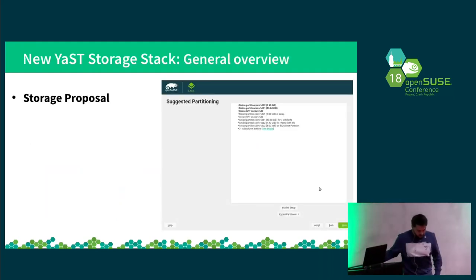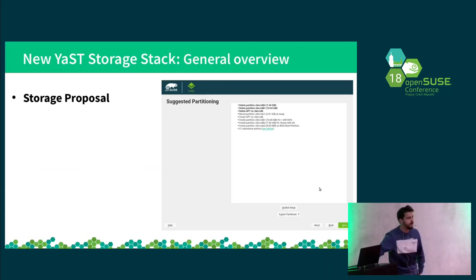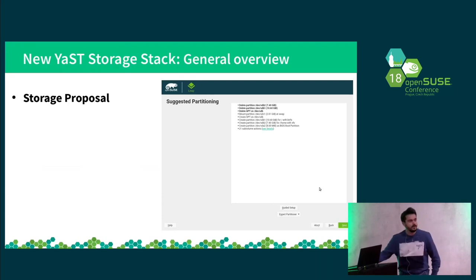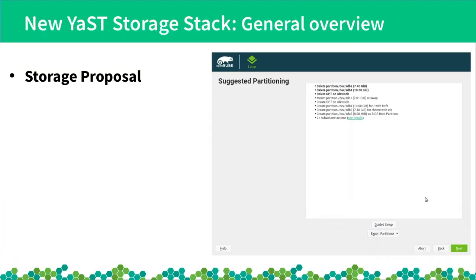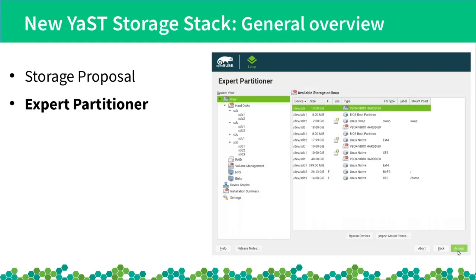The JAST storage stack offers the user two main components. One of them is the storage proposal, and this presentation is mainly focused on this tool, because this component probably has the most changes compared with the old storage. The other main component is the expert partitioner.